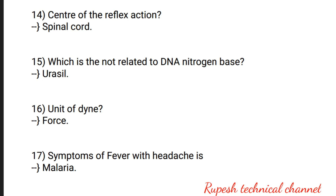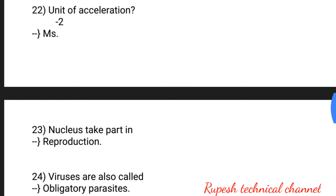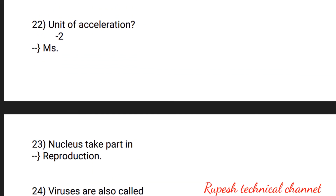Question number 16: unit of dying force. Question number 17: symptoms of fever with shivering — malaria. Question number 18: liver produces bile juice. Question number 19: stomach produces hydrochloric acid (HCl). Question number 20: pancreas produces insulin. Question number 21: in blood cancer, the number of WBCs is higher than average.